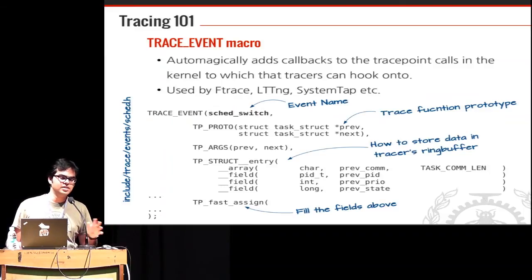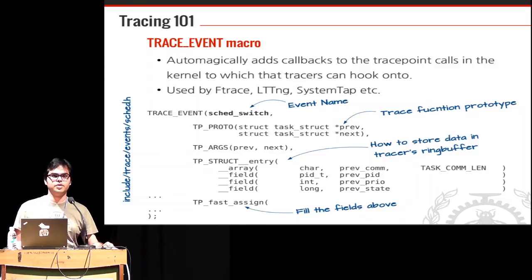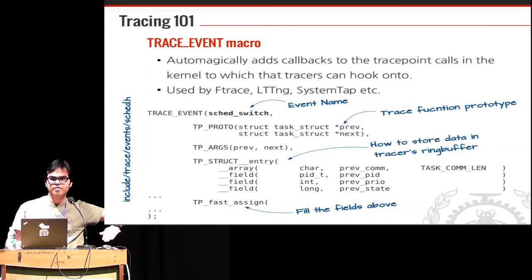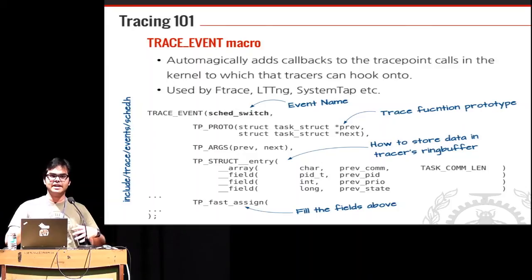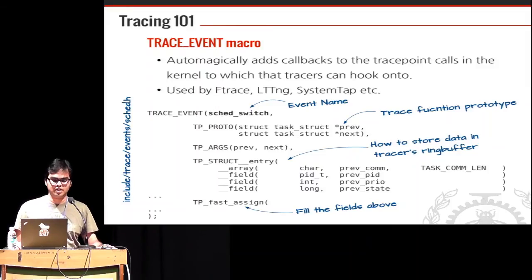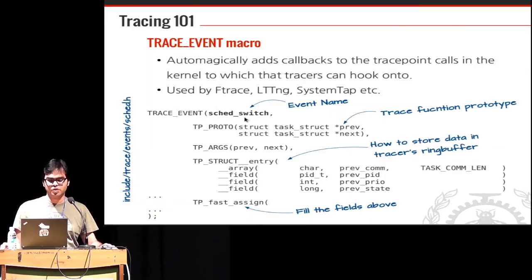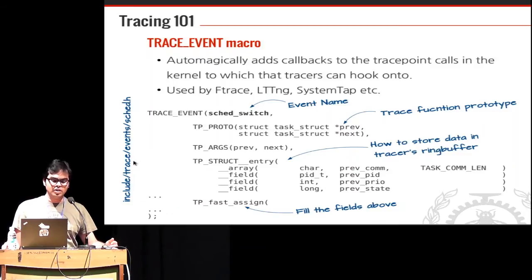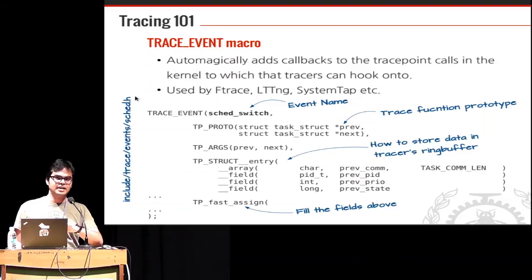The trace_event macro is a macro in the kernel that automatically adds callbacks to trace point calls. You have TRACE_EVENT with your event name — trace_sched_switch for example — and these calls are everywhere in the kernel. Any infrastructure built upon trace_event can receive and use that data. It's used by almost all tracing tools inside the kernel: ftrace, LTTNG, SystemTap. You give the event name, a function prototype, and specify how to store the data.